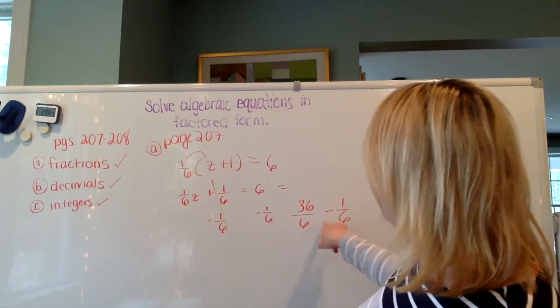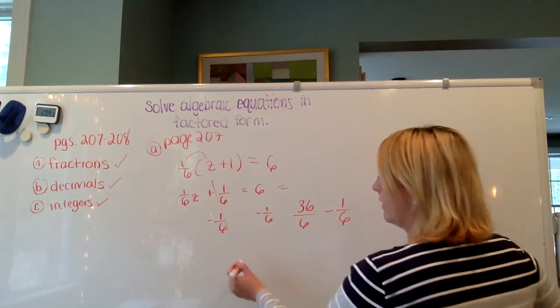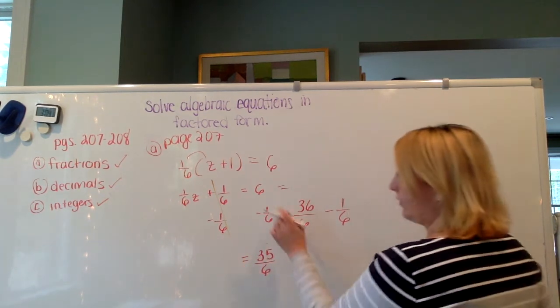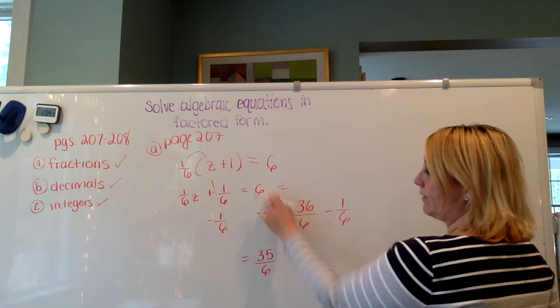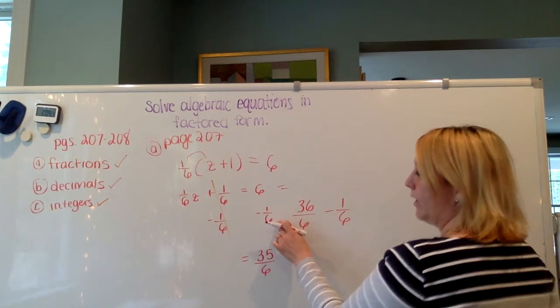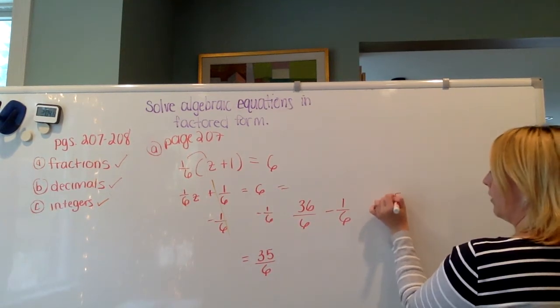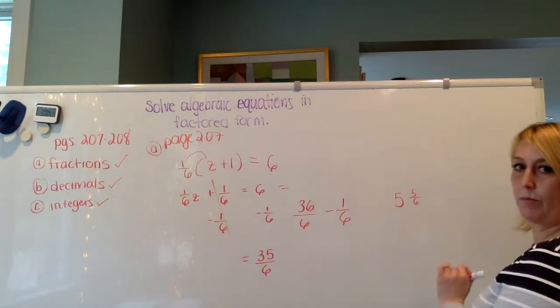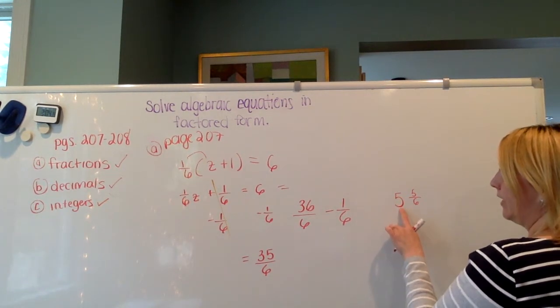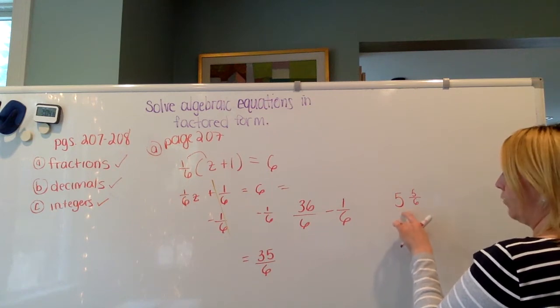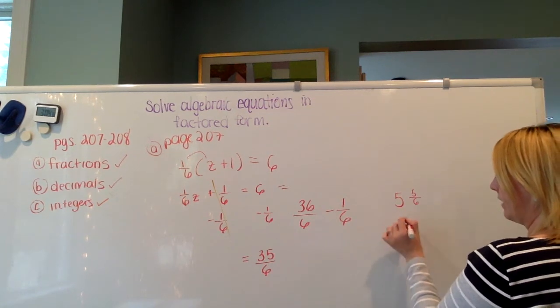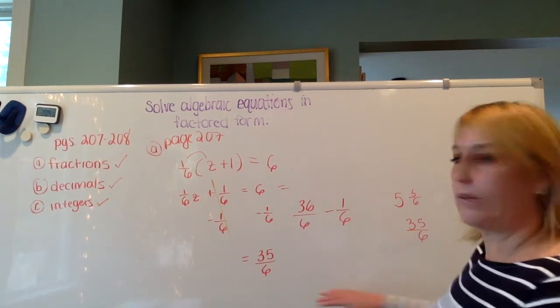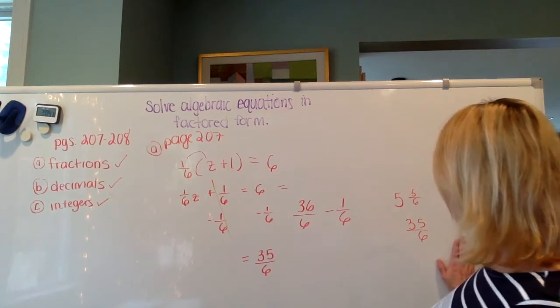So 36/6 minus 1/6 is 35/6, right? So I had 6, and I had to take one-sixth away from that. If I wanted to, I would have ended up having an improper fraction there by having 6 and taking one-sixth away. But 5 and 5/6 is the same as saying 35/6. So that's where I'm getting 35/6 from, over there.